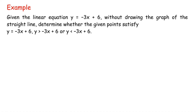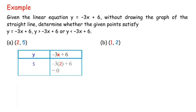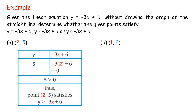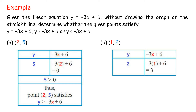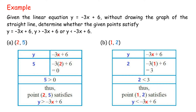Given the linear equation y equals negative 3x plus 6, without drawing the graph, determine whether the given points satisfy y equals negative 3x plus 6, y greater than negative 3x plus 6, or y less than negative 3x plus 6, for point A (2, 5) and point B (1, 2). Solution: For point (2, 5): negative 3 times 2 plus 6 equals 0; since 5 greater than 0, point (2, 5) satisfies y greater than negative 3x plus 6. For point (1, 2): negative 3 times 1 plus 6 equals 3; since 2 less than 3, point (1, 2) satisfies y less than negative 3x plus 6.